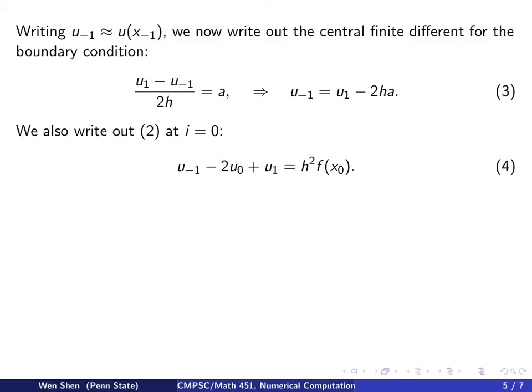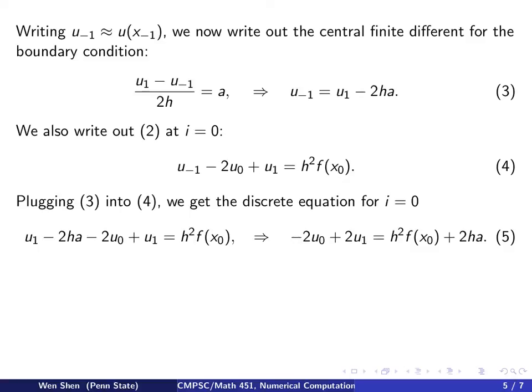We write out the discrete version of the Poisson equation at i = 0: u_{-1} - 2u0 + u1 = h²f(x0). We plug in equation 3, the u_{-1}, into the u_{-1} in equation 4. We have u1 - 2ha minus 2u0 plus u1 equals h²f(x0). We combine the two u1 terms and move this term to the right-hand side: -2u0 + 2u1 = h²f(x0) + 2ha.